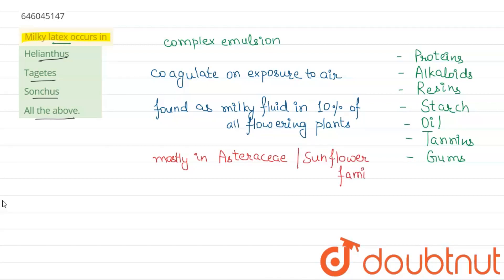And now we'll see all these options one by one. Starting with the first option, which is Helianthus. Helianthus, commonly known as sunflower, is a genus of plant belonging to Asteraceae. That means it belongs to the Asteraceae family, so this option is correct.